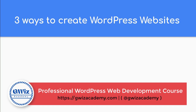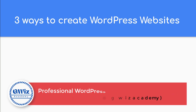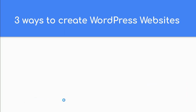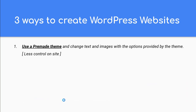Broadly, we have three main ways to create WordPress websites. The first option is you simply use pre-made themes. There are tons of themes out there and you can select one that you like, install it, and change the images and text.